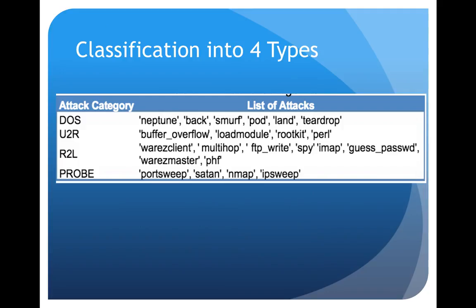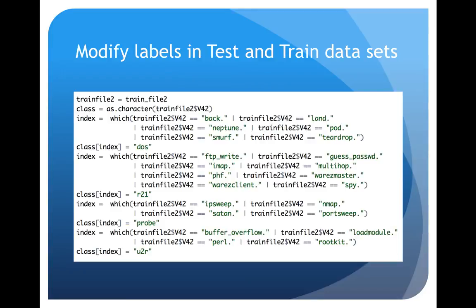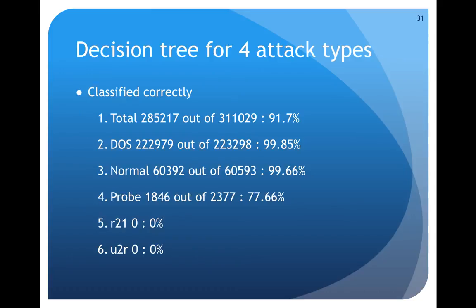After successfully classifying data into good and bad, I tried to classify the bad connections further into the four attack categories. So then I labeled the respective subcategories of attacks to the grouped category. This is the R code for that. And then I used decision tree to classify the data into these four attack types.